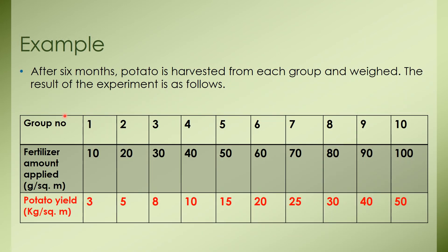After 6 months, potato is harvested from each group and weighed. The results of the experiment is as follows. So the first row shows you the group number and second one shows you the fertilizer amount. And the third one shows you the potato yield per square meter. For example, group number 1, he got 3 kilograms per square meter.